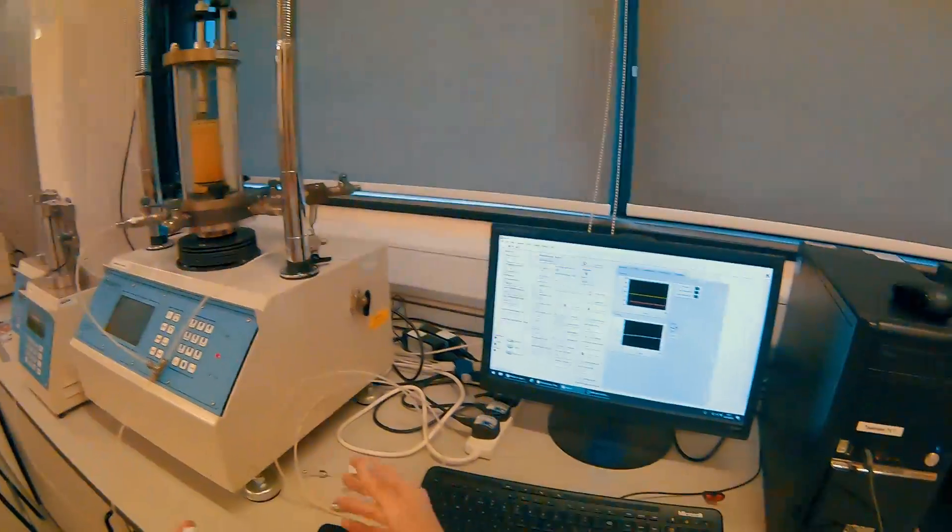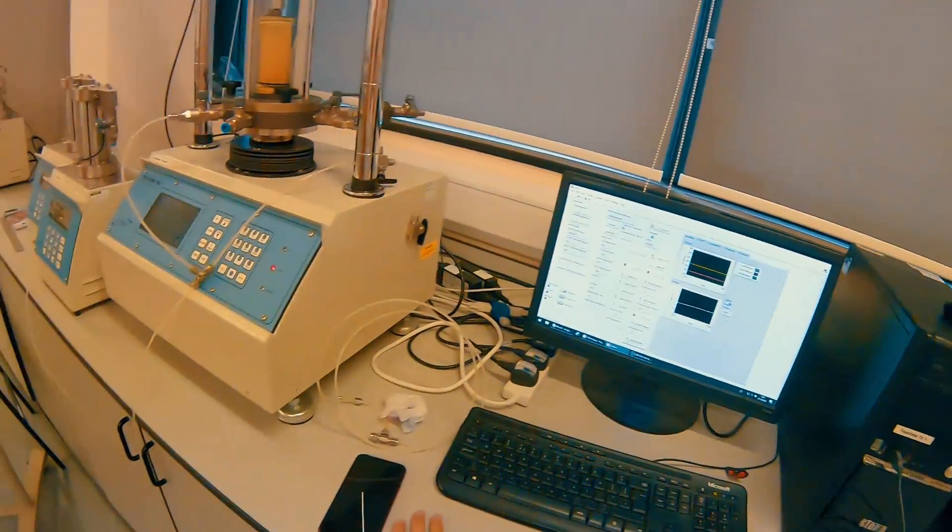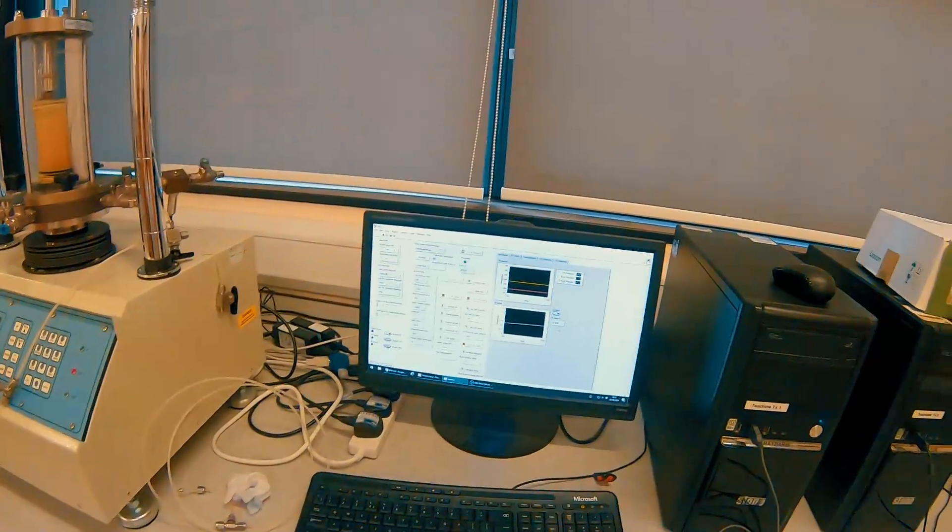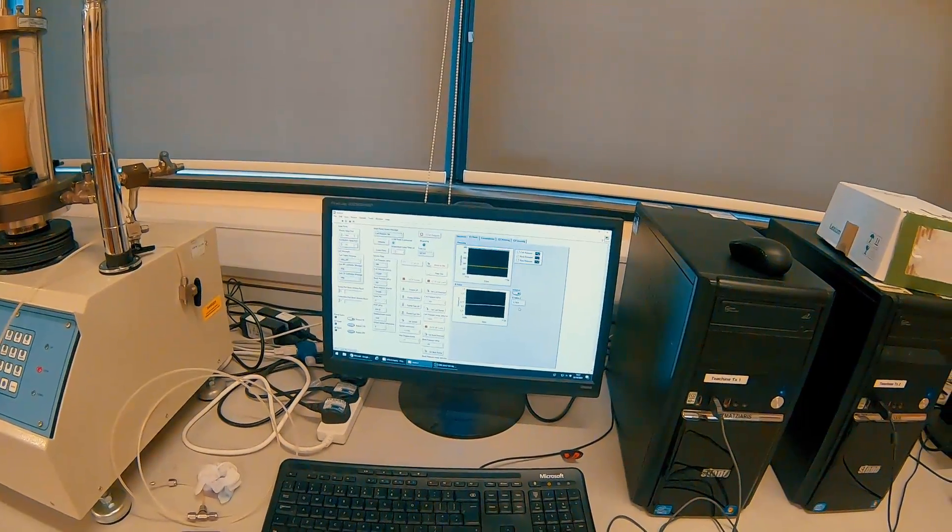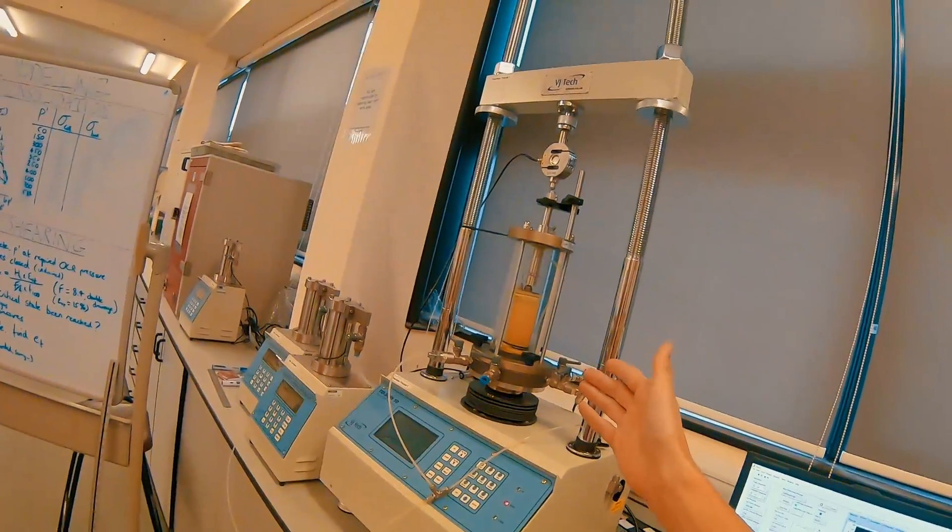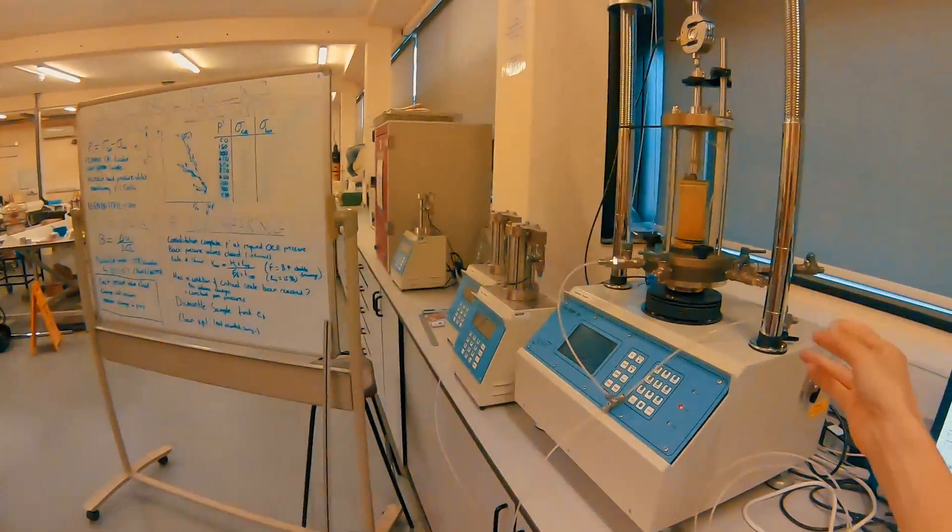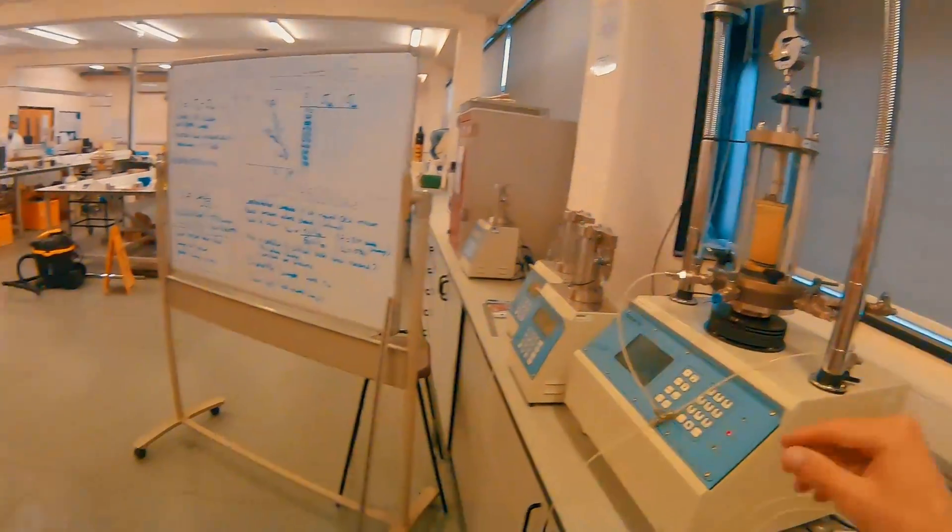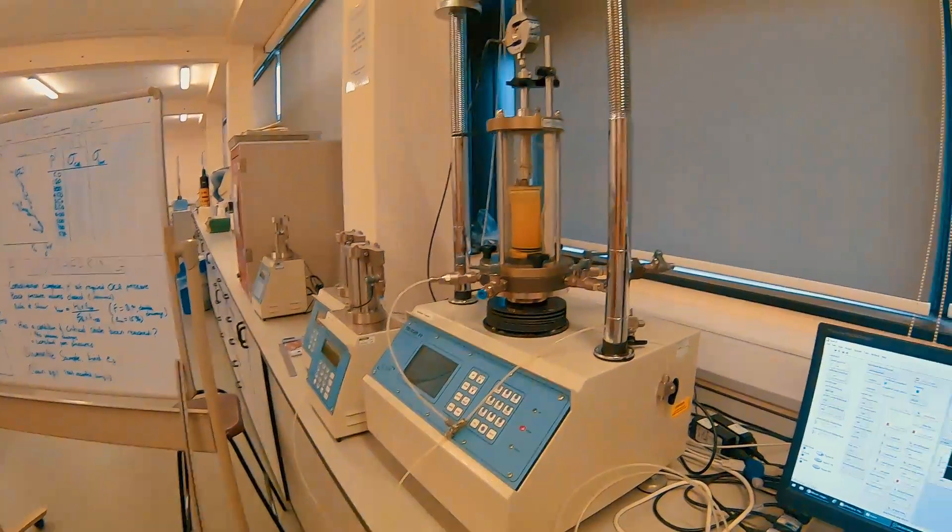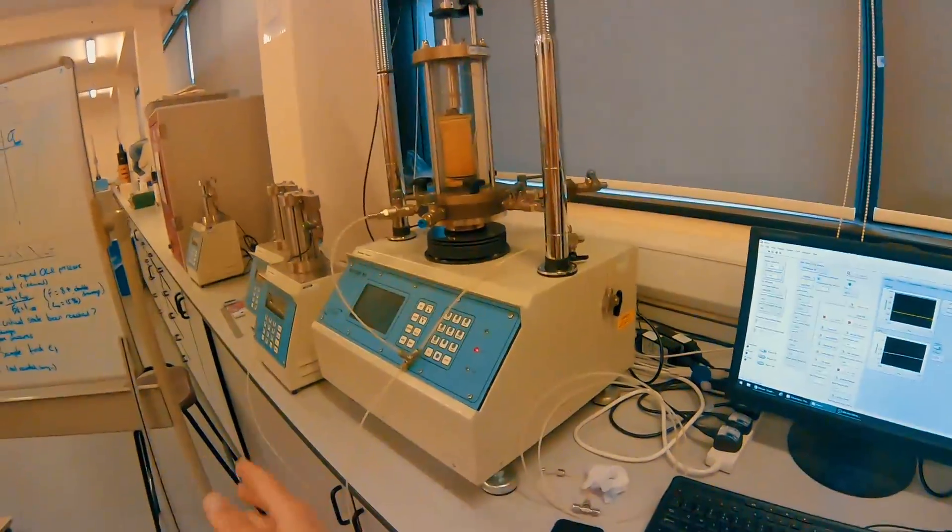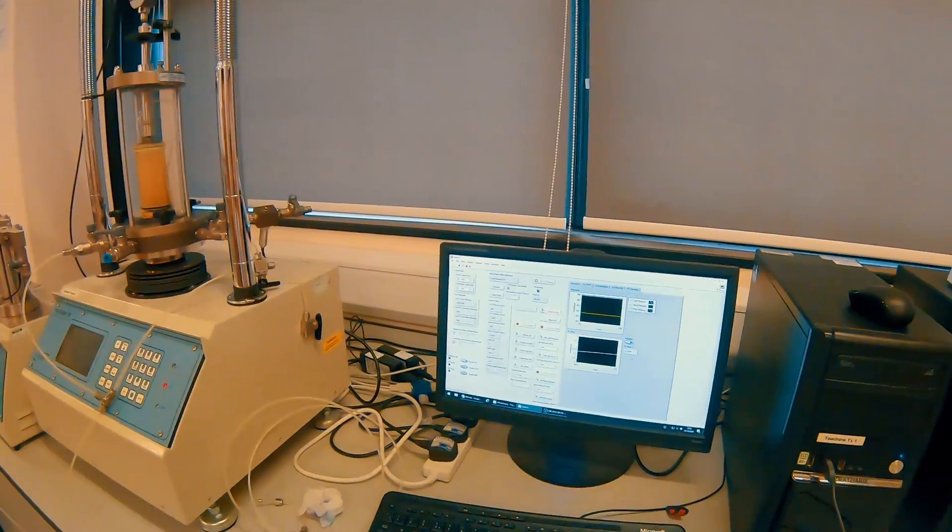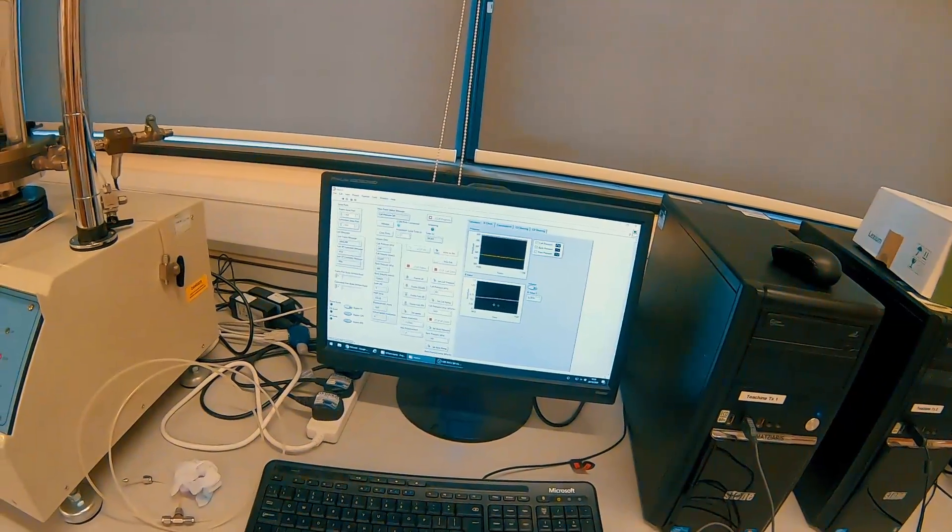So for our purposes, for the rest of this experiment during consolidation and shearing, we have a good level of saturation. Now, again, just to reiterate, the standards stipulate that you want above 99% saturation in the sample. So realistically, what we should have done for this sample is flushed it for longer to have the air bubbles flow out of the sample and saturate our sample further. Because we couldn't put high pressures on our back pressure controller, we should really have either used different equipment or left it for a lot longer.